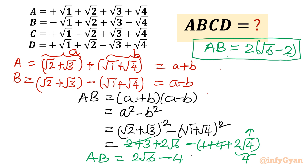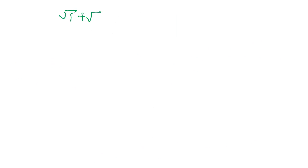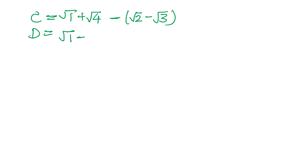Now come to C and D. If you see, what is the difference between C and D? Sign change in both root 2 and root 3. So what will I write here? Let me demonstrate. Root 1 plus root 4, then I will write minus root 2 minus root 3 — this is my C. And if I write my D, then it will become root 1 plus root 4, then plus the quantity root 2 minus root 3.